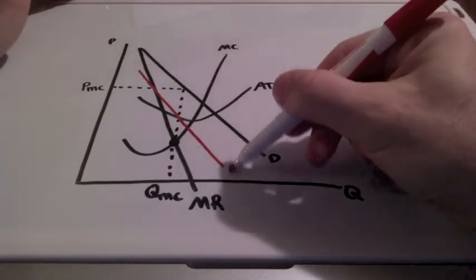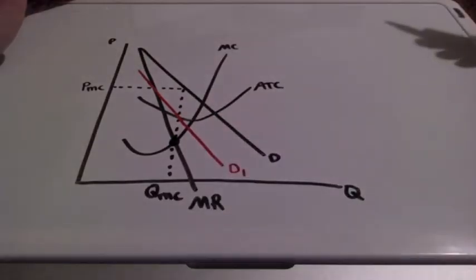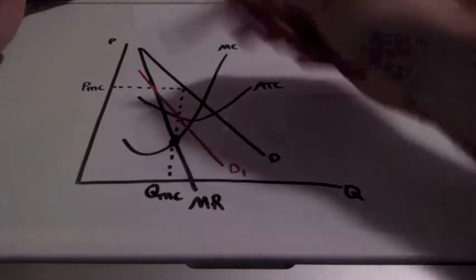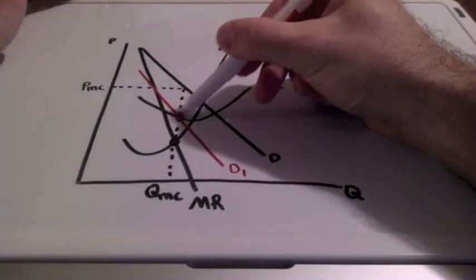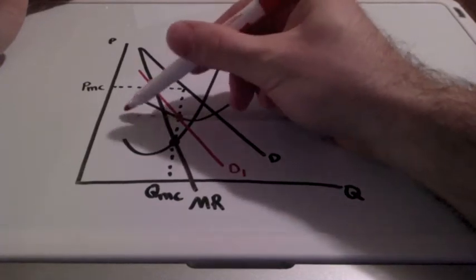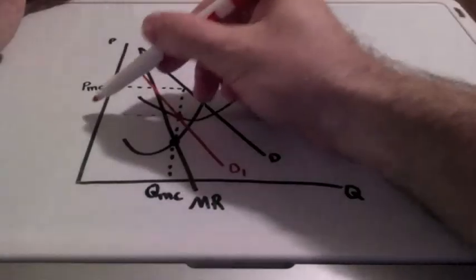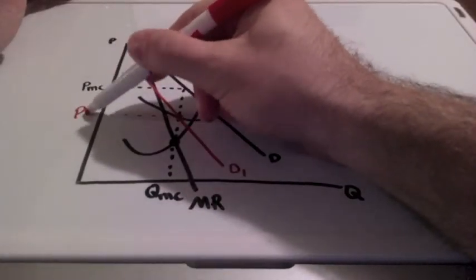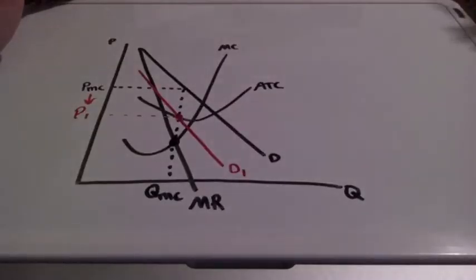And we refer to this as being tangent to average total cost. This point right here. This represents what we call a long run equilibrium point. Our prices are going to go down and all the short run profits no longer exist. At this point, the firms have reached their long run equilibrium. We refer to this as a firm making normal profits or a break even point.